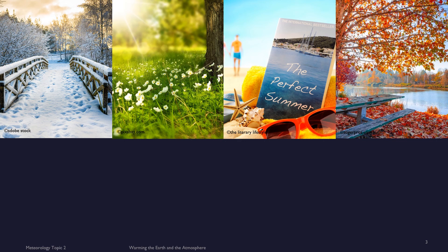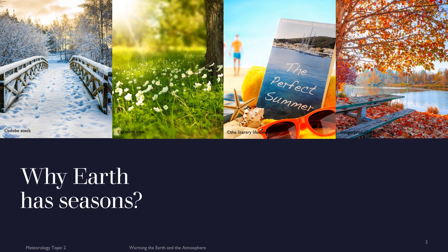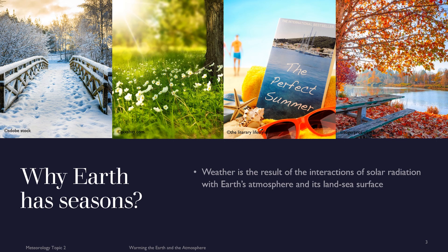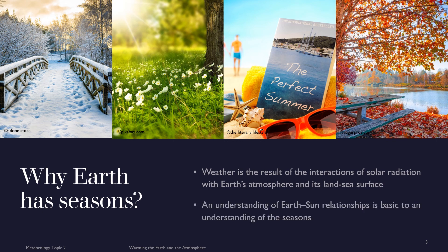What can you see in these pictures? These are four different photographs showing the different seasons of the earth: winter on the left, then spring, summer, and lastly fall or autumn. Why do we have the seasons? Weather is the state of the atmosphere at a given place and time, and it results from the interactions of solar radiation with earth's atmosphere and its land-sea surface. To understand why the earth has seasons, we need to understand the relationship between the earth and the sun.